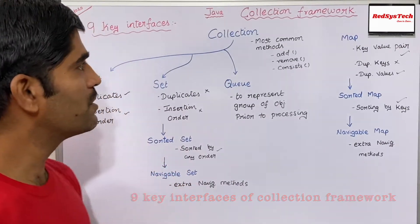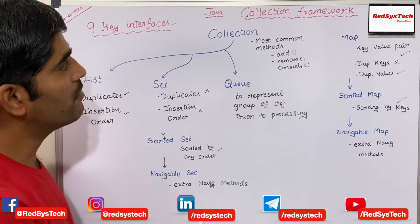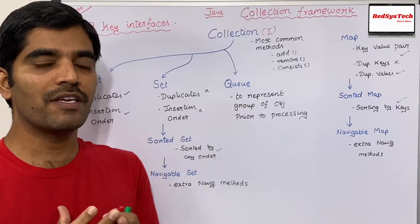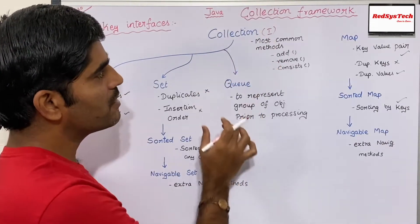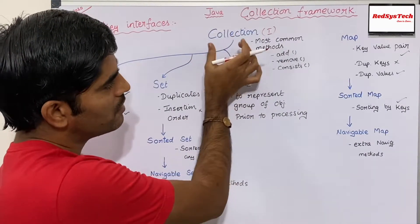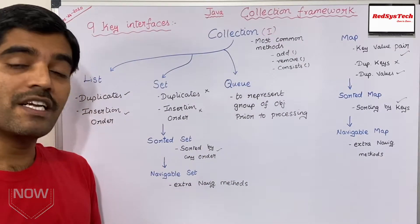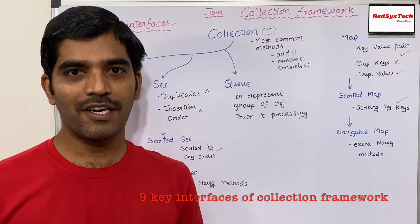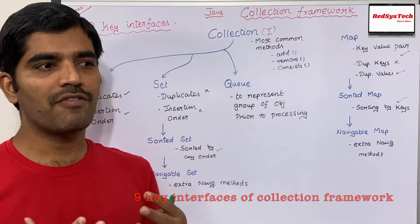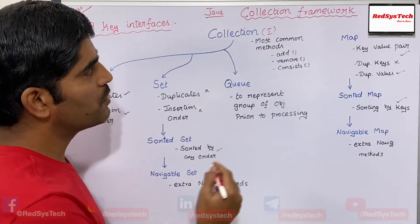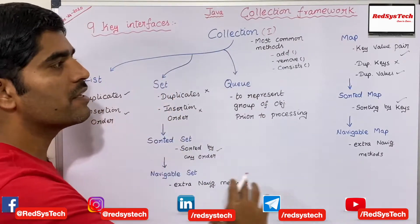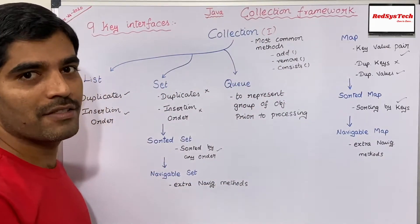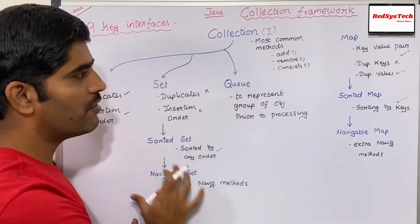Let's get started. In the collection framework, we have an interface called Collection. Collection itself is an interface — it specifies a list of methods which we have to use. This collection interface contains the most common methods. When we deal with multiple data, whether we need to add some data, remove some data, or check whether it already exists, these common operations can be done with the help of the Collection interface. That is why Collection is considered the parent of all the interfaces inside the collection framework.